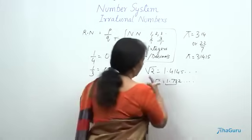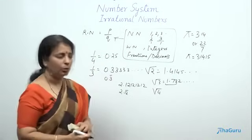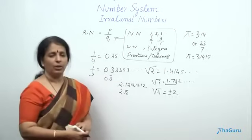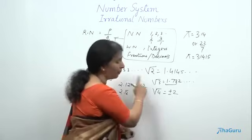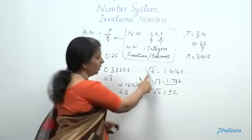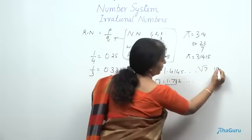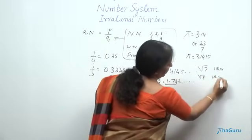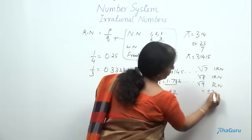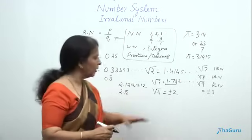If I go for root 4, is it irrational? No, we know the value of root 4 is plus or minus 2, which is rational. Any number which does not have a perfect square root - the square root of that number is an irrational number. Root 7 is irrational, root 8 is irrational. But root 9 is rational because it equals plus or minus 3.